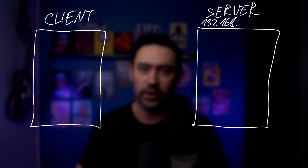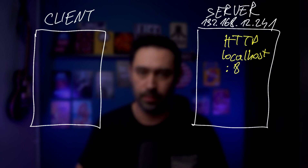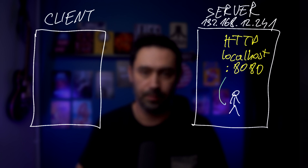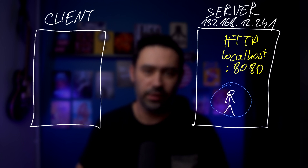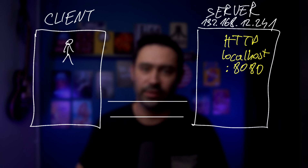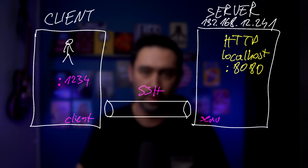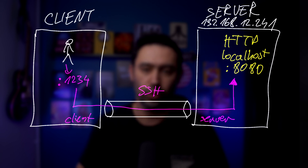Let's imagine a scenario where we have a server that has a service listening only on localhost. You cannot connect to it remotely. The only way to establish the connection is from within that server. SSH local port forwarding allows you to build a secure tunnel between the client and the server. SSH will open a socket on the client machine — in our example, port 1234 TCP — that the client can connect to. SSH will then pass the traffic over a secure channel to the remote endpoint.